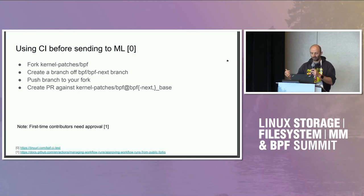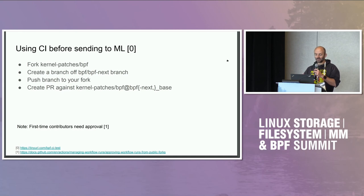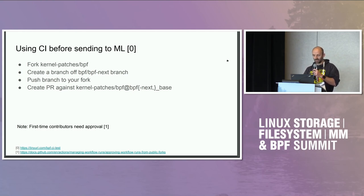There is also a way to run tests in the CI without going through the mailing list, which is pretty useful if you want to play around and don't have something that's yet ready for review. The TLDR is you need to clone the kernel patches BPF repo into your own personal GitHub repo, create your own branch, create a PR from your branch to kernel patches BPF, and then wait for CI to happen.